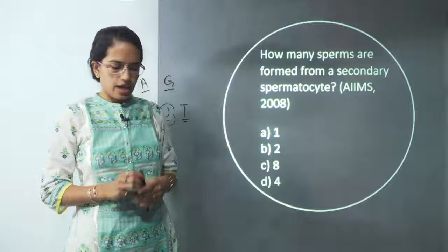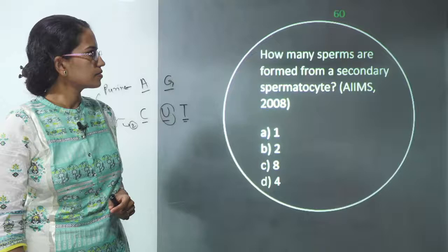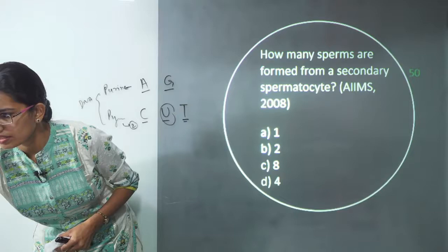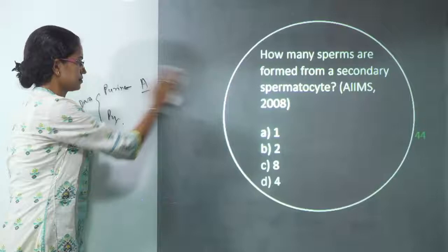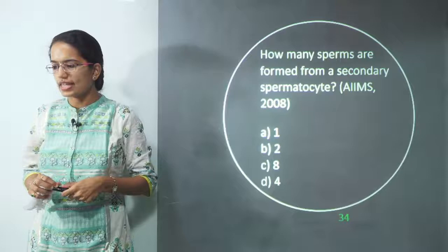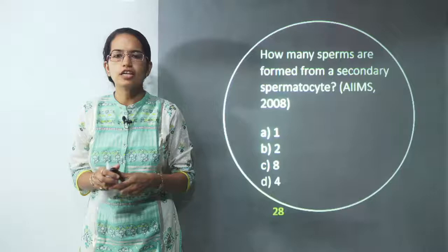How many sperms are formed from a secondary spermatocyte? Sangha has the correct answer — the right answer is B.